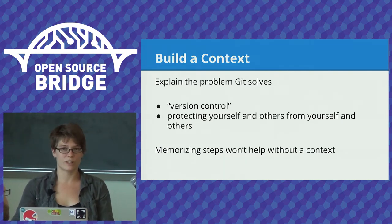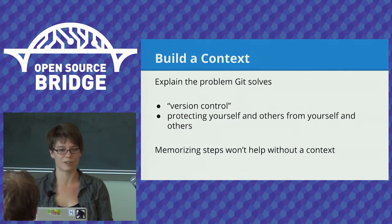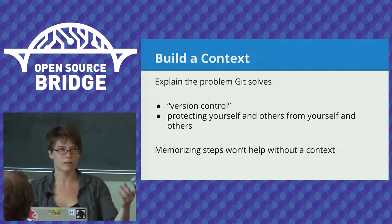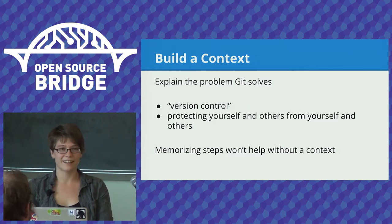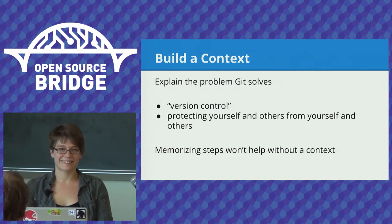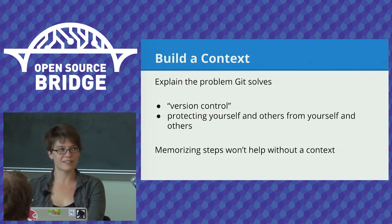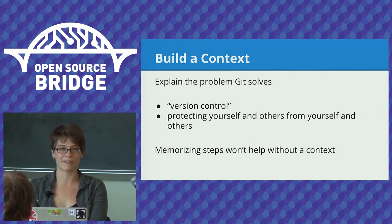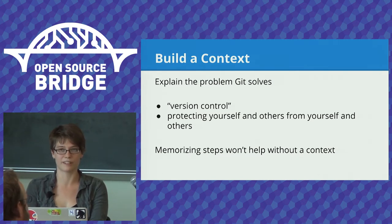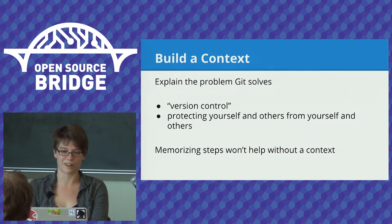Step one: the easiest way to avoid a lot of confusion later on is to make sure your beginner actually knows what problem they're solving. If you just say 'this is Git, it's version control, you're going to need it,' it's going to be really confusing later on why you're talking about graph theory. Start by explaining in the context of writing code with others. I like to say that Git protects you and others from yourself and others — you can screw up and it's there to protect you, and other people don't have to suffer through the consequences.